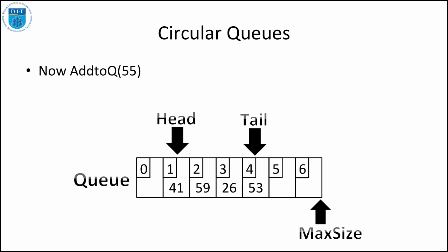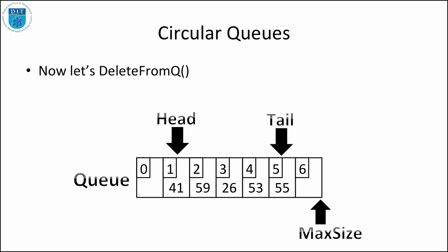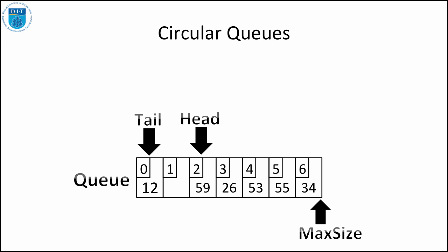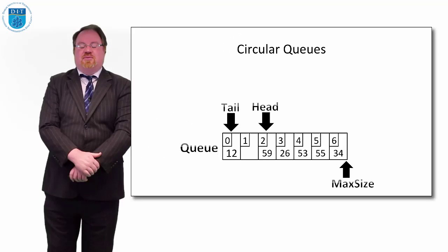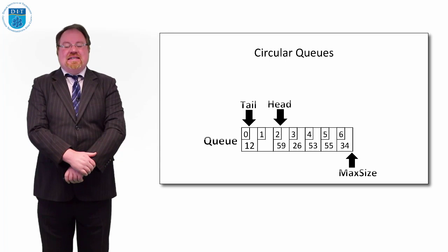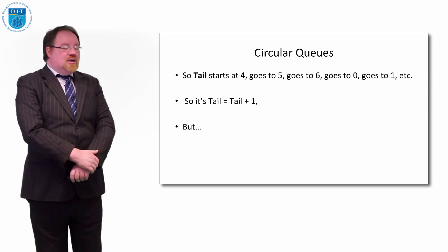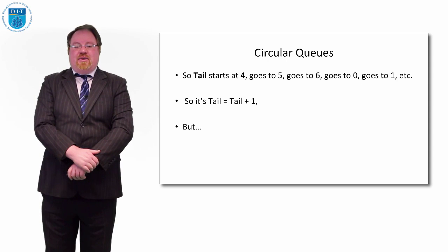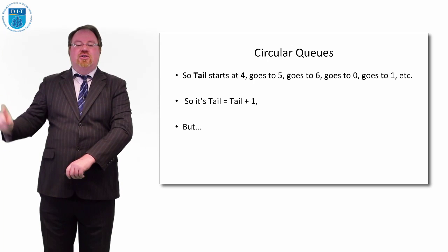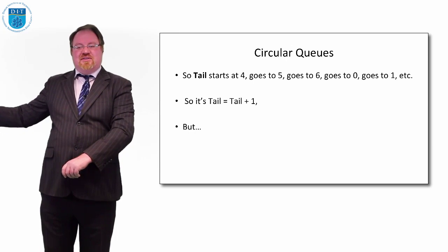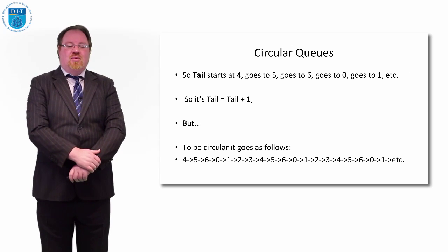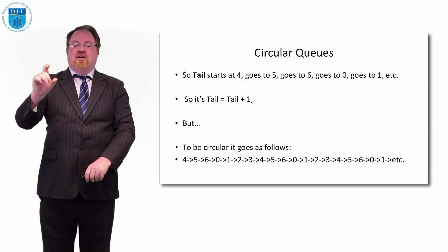So let's do a simulation. Head is pointing to zero, tail is pointing to three. If we add an element on, tail becomes four; add another, tail becomes five. If we take an element out of the head, head moves to one; take another off the head, head moves to two. If we add an element to tail, in the old situation with a linear queue that would be full, whereas with a circular queue, adding another element brings tail around to the zeroth element.